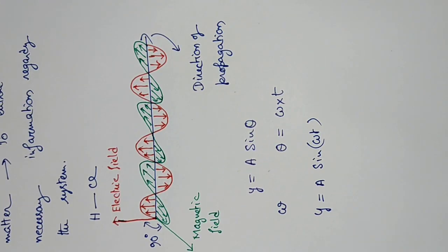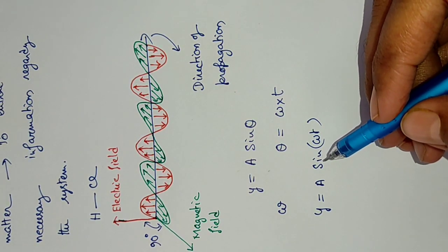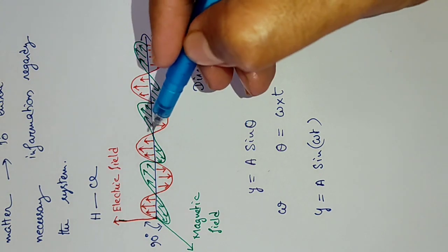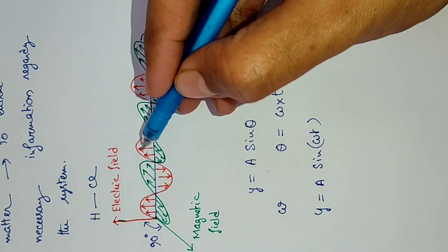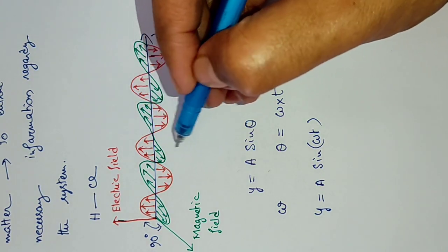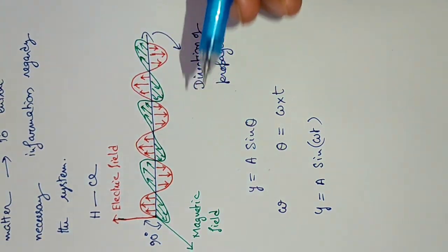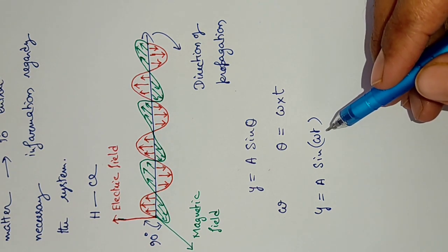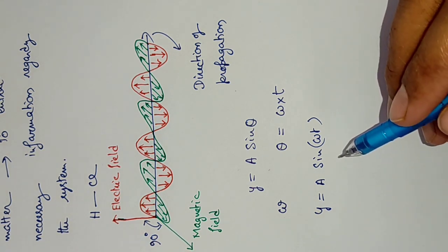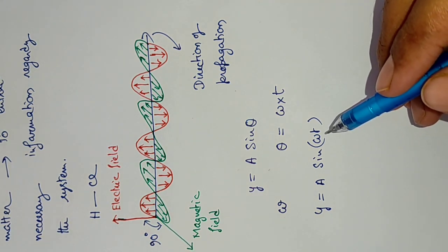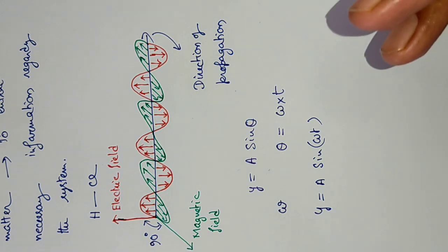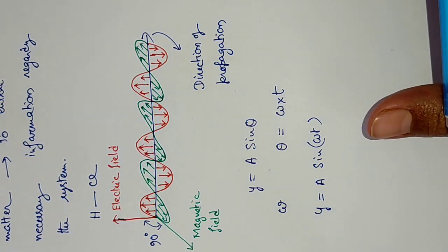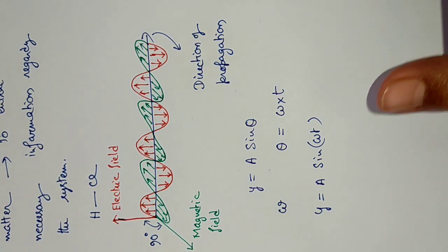This is the variation of displacement of the oscillation of the wave with time in this direction, but it is not the traveling equation. For the traveling equation it will be y equals A sin(kx − ωt). That I will discuss in the harmonic oscillator section later.